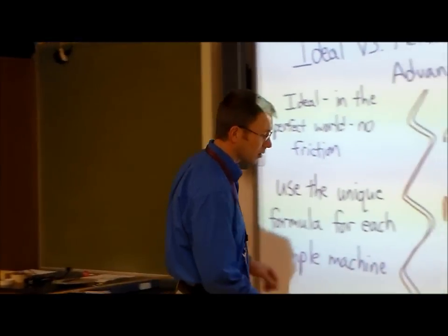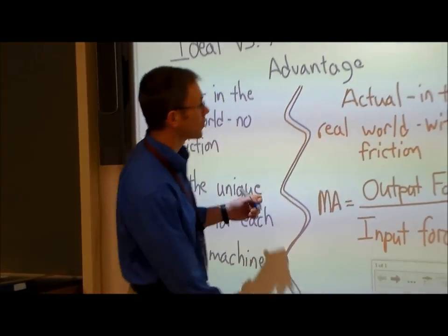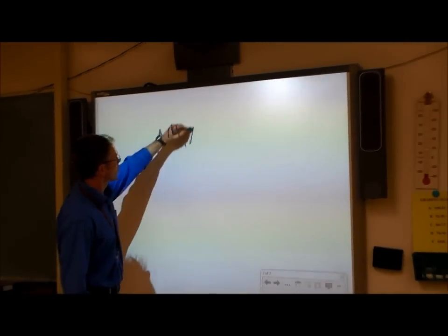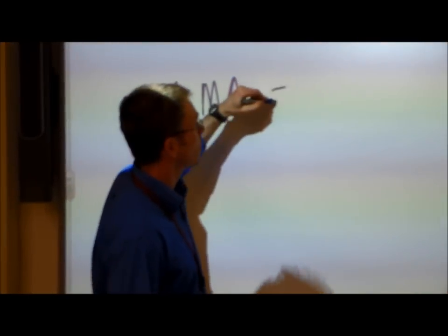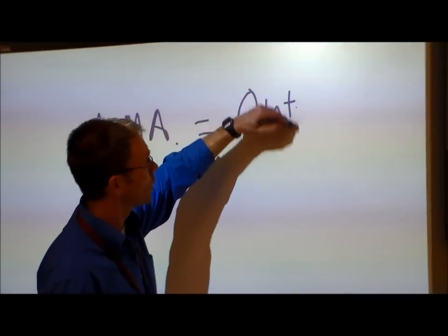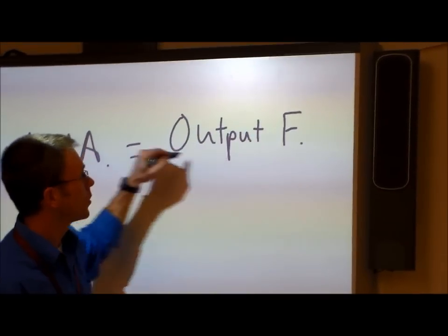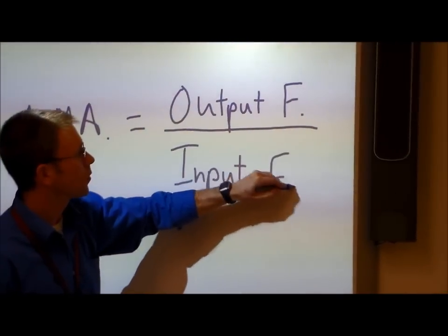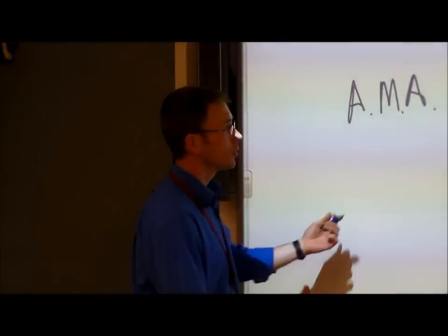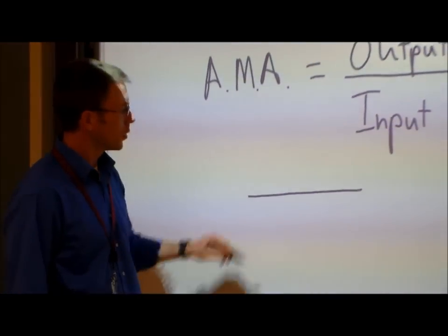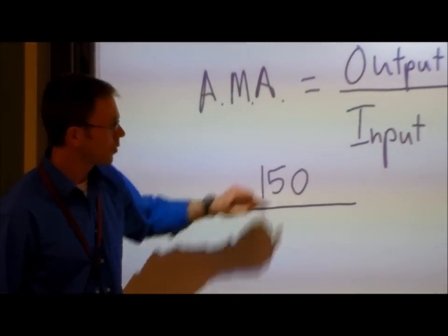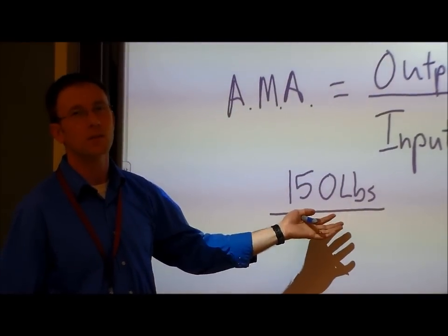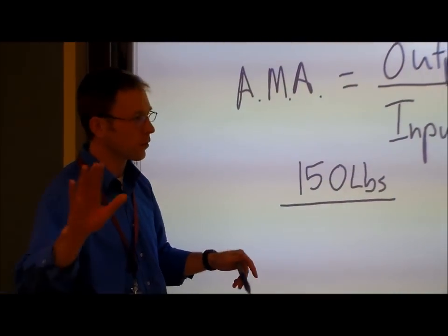Now, let's calculate the actual mechanical advantage. The actual mechanical advantage formula is output force divided by input force. So, my output force, 150 pounds. We're using the English system here. I know in this class we usually use Newtons, but it just makes it easier for right now.